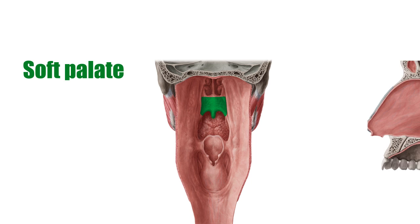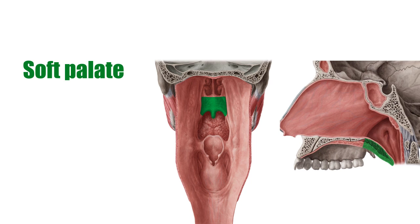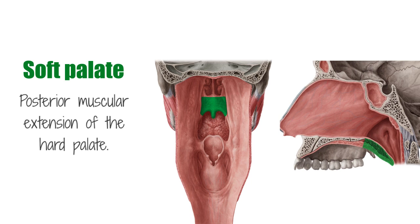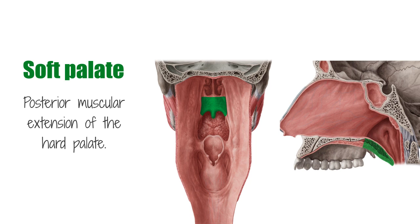The soft palate is the posterior muscular extension of the hard palate, which together makes up the palate of the oral cavity and the floor of the nasal cavity. This video will discuss the soft palate including its borders, its function, its general anatomy, and its musculature.